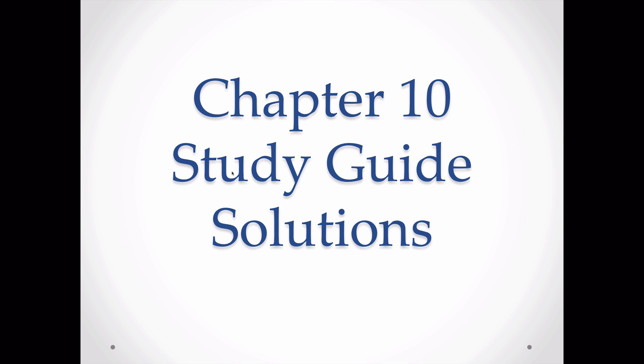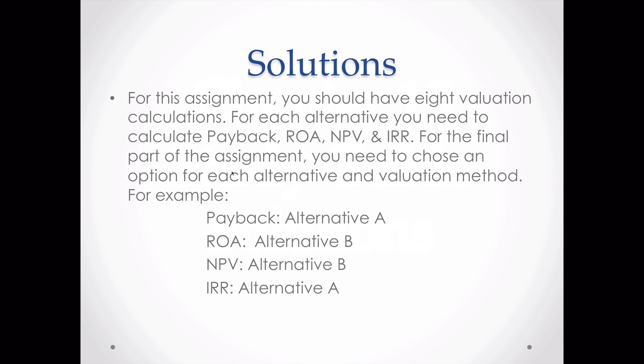This is the Chapter 10 study guide solutions. The problem we have here on the study guide is going to be on the test. We have two alternatives — Alternative A and Alternative B — and you need to calculate and use all four evaluation methods to evaluate them: payback, ROA, NPV, and IRR.